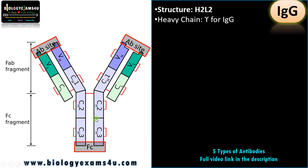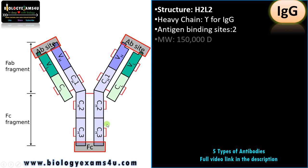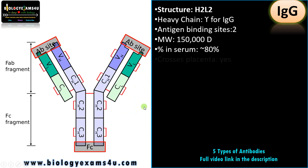The heavy chain is gamma in the case of IgG — that is why it is called IgG. There are two antigen binding sites. The molecular weight is approximately 150,000 Dalton, and it is the most abundant antibody, accounting for nearly 80% of antibodies in serum.